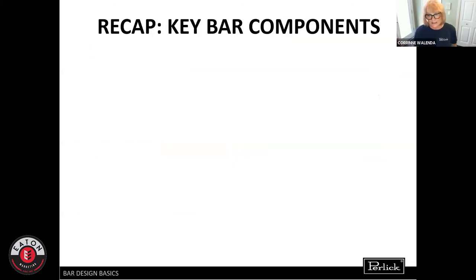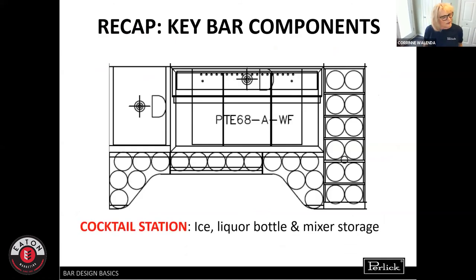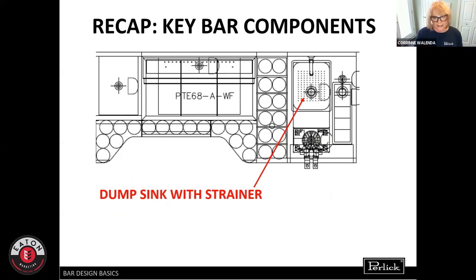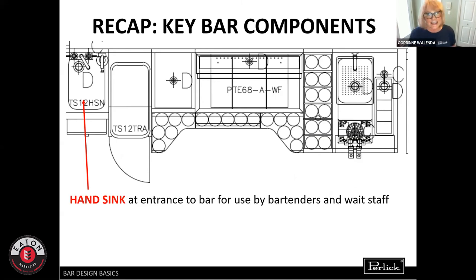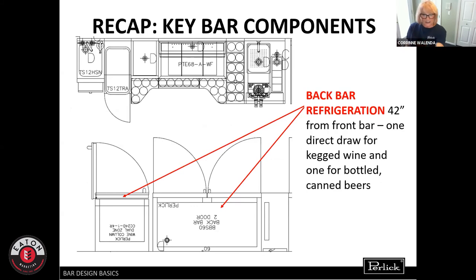Let's recap: get the cocktail station — the bartender's cockpit — right, with your ice, liquor bottle storage, and mixer storage. Add the dump sink with a strainer; in this Tobin Ellis setup, in front of the dump sink is a cocktail shaker rinser, and to the right is a variable-depth dipper well for muddlers, strainers, and other mixology tools. Plan for trash, and add a hand sink at the entrance to the bar usable by both bartenders and wait staff. In this design, the back bar units are 42 inches from the front bar — slightly larger than recommended but it works fine.